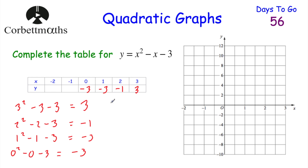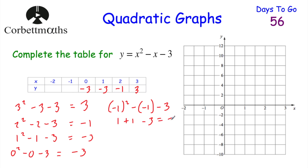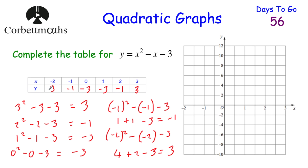For x equals negative 1, we need to be careful. Negative 1 squared is 1 (negative times negative is positive). Then we subtract negative 1, which means adding 1, so we have 2. Then subtract 3, giving negative 1. You can see a pattern: negative 3, negative 3, negative 1, negative 1 — suggesting the next value will be 3. And indeed, for x equals negative 2, we get 4 plus 2 minus 3 equals 3.